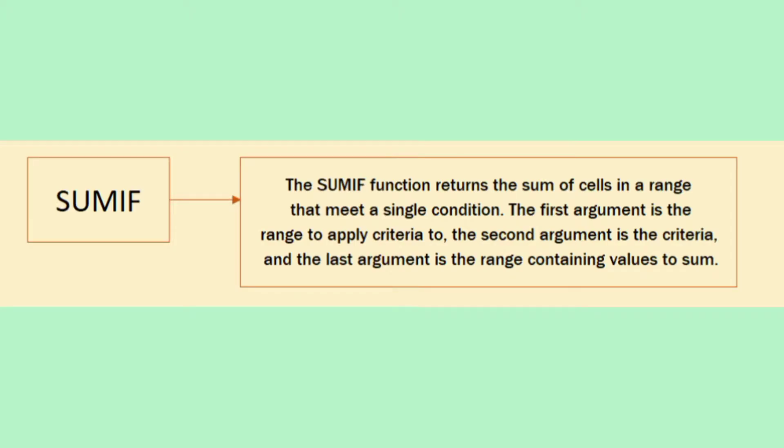The SUMIF function returns the sum of cells in a range that meet a single condition. The first argument is the range to apply criteria to. The second argument is the criteria. And the last argument is the range containing values to sum.